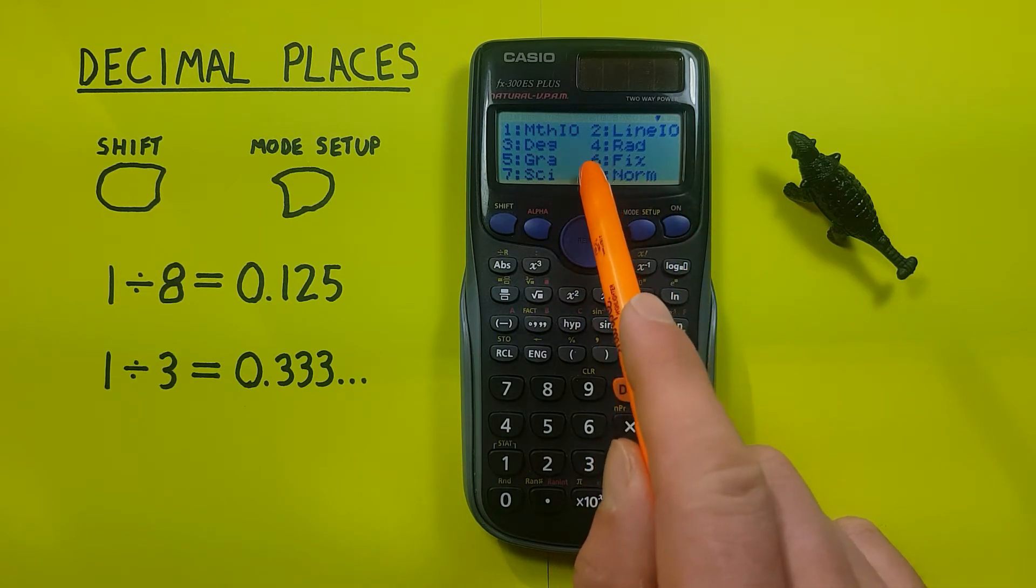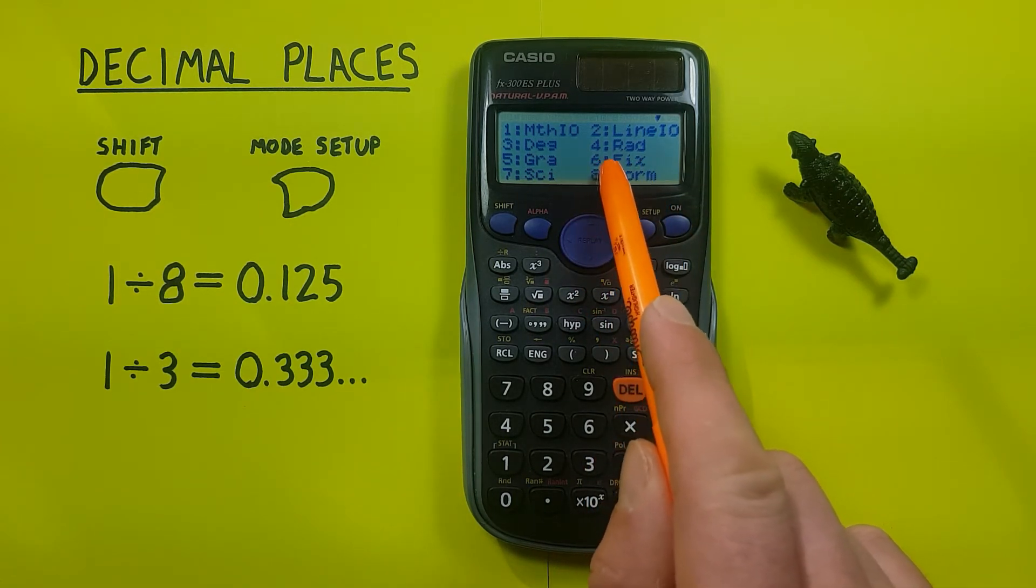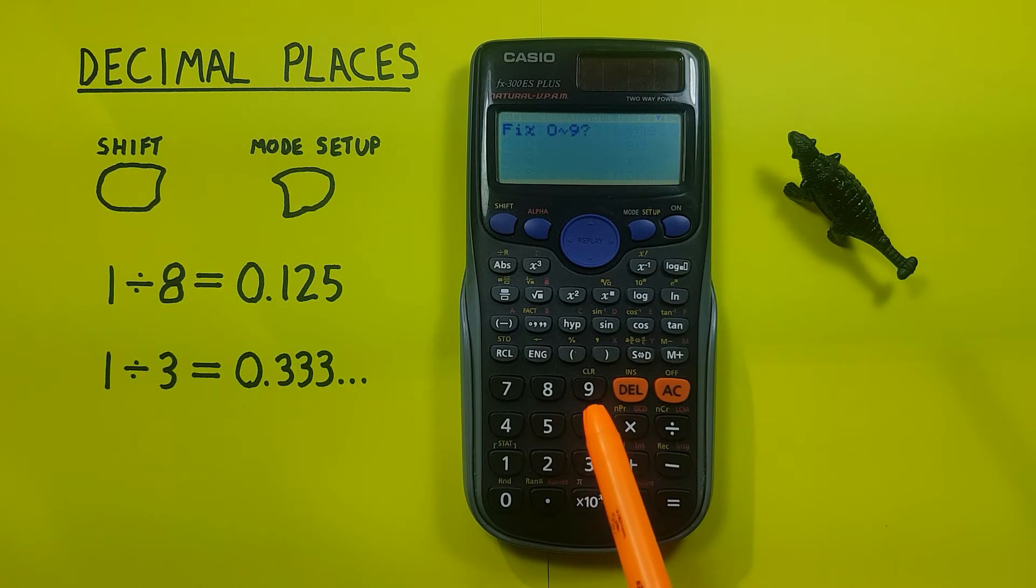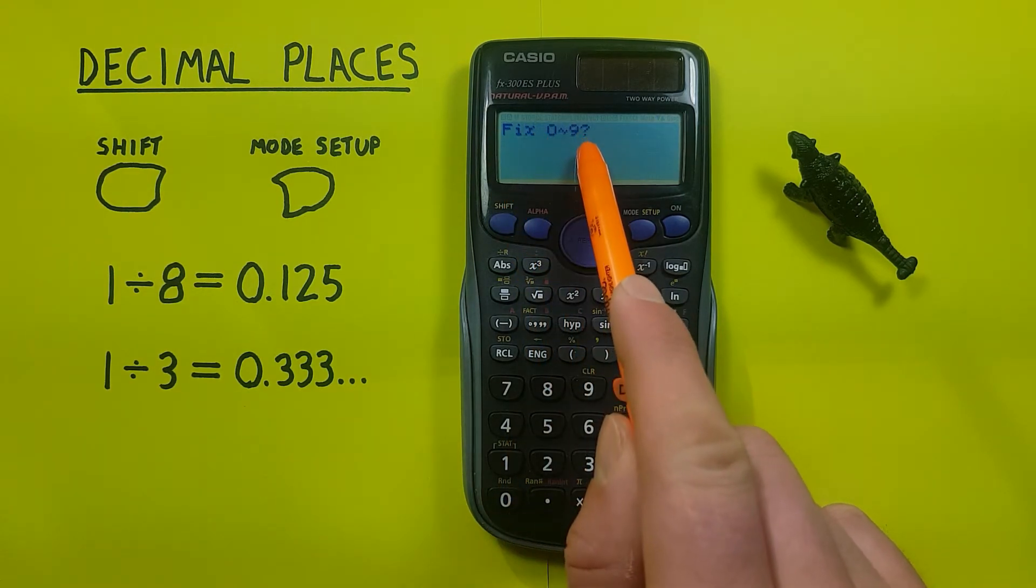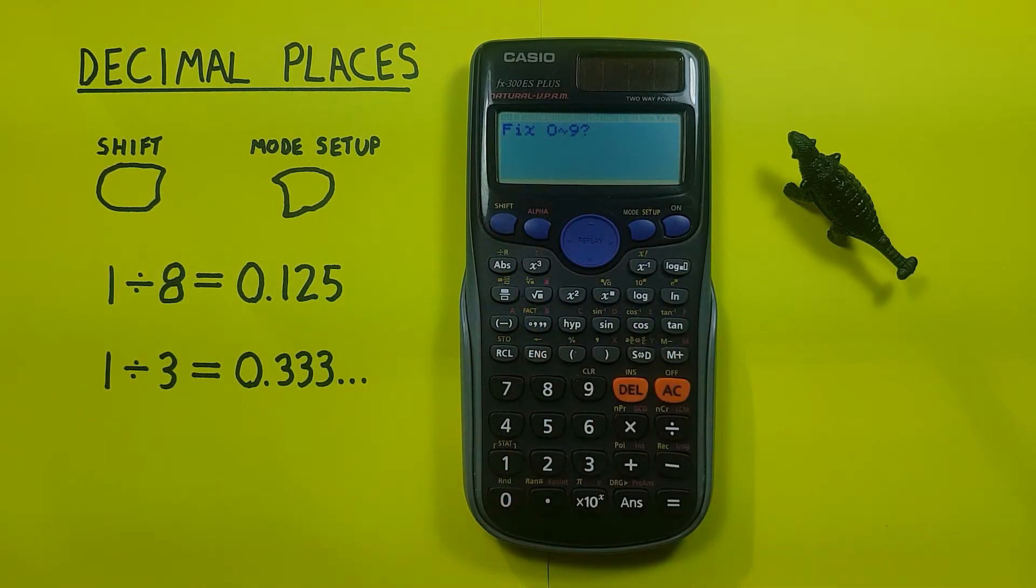We want to turn on fix mode which allows us to set decimal places, so we press 6 and then it brings us to this menu and asks us how many decimal places we want.